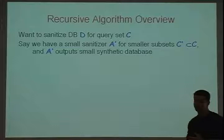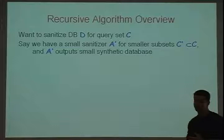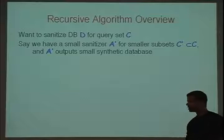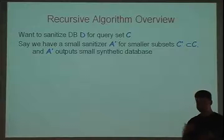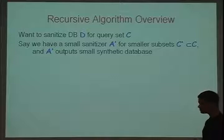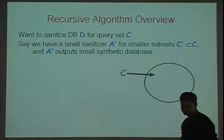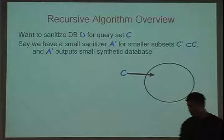Moreover, the running time of the new algorithm is just polynomial — polynomial in the database size, data universe size, and query set size. This does give us what we wanted: an implementable, efficient general purpose sanitizer for answering large collections of queries on a small database. Comparing with Blum-Liggett-Roth: in terms of error, our initial error factor n^(1/2) is better than n^(2/3). The algorithm is recursive: we have a database D and a big query set C we want to answer.